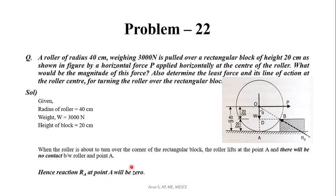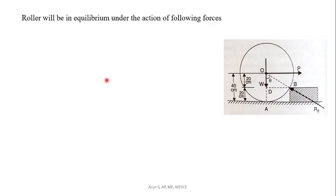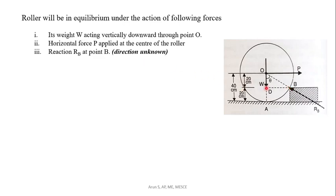In this situation, the forces acting on the body are: the weight W acting vertically downward through the center, the horizontal force P acting at the center in the horizontal direction, and the reaction at contact point B. The reaction at B acts along a certain direction. These are the three forces acting on the system.